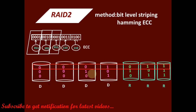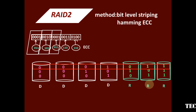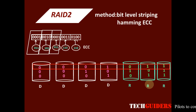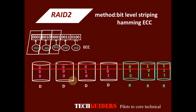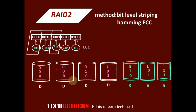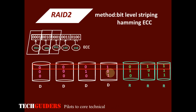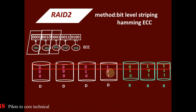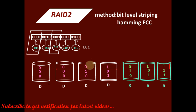RAID 2 provides redundancy and thereby reliability. It ensures that the data is safe even if any one of the disks fails, and we will be able to rebuild the data using the remaining information.